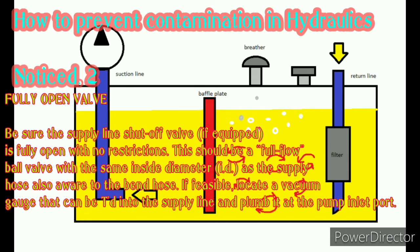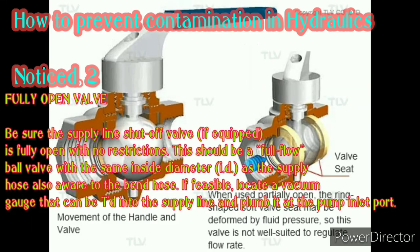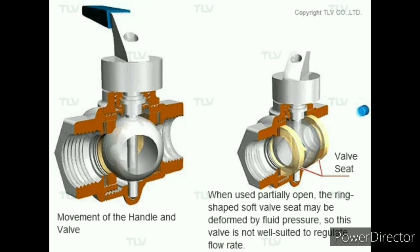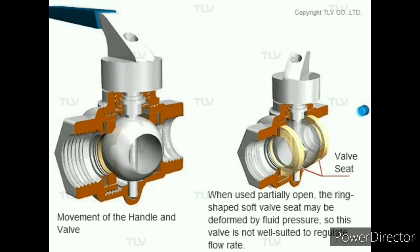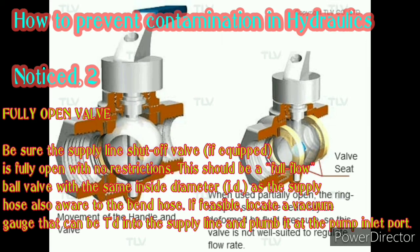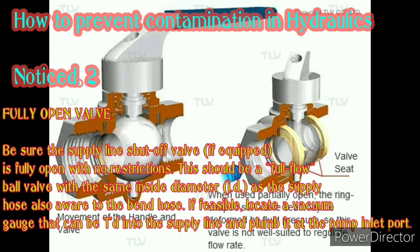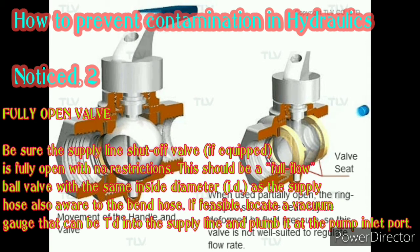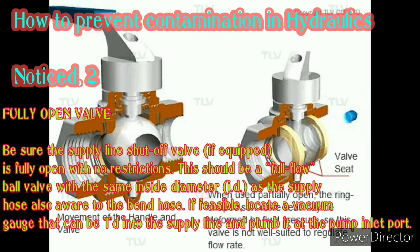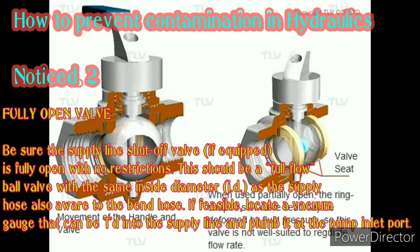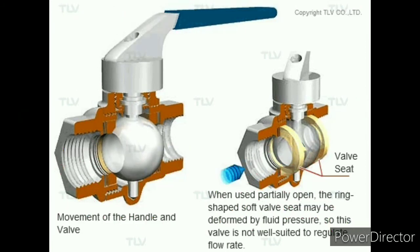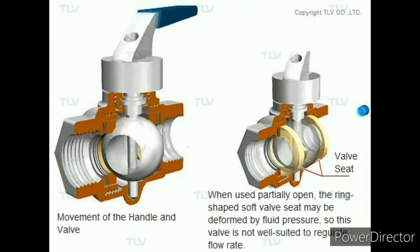Fully open valve: be sure the supply line shut-off valve, if equipped, is fully open with no restrictions. This should be a full-flow ball valve with the same inside diameter as the supply hose. Also be aware of bent hose. If feasible, locate a vacuum gauge that can be T-ed into the supply line at the pump inlet port.